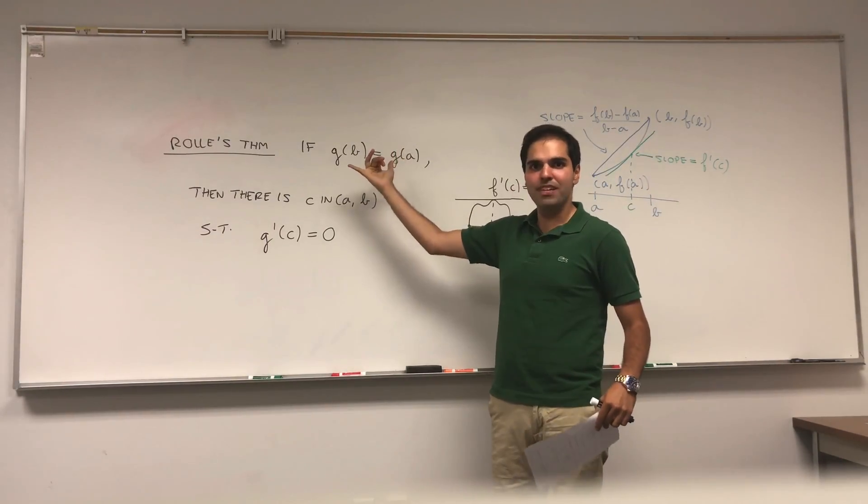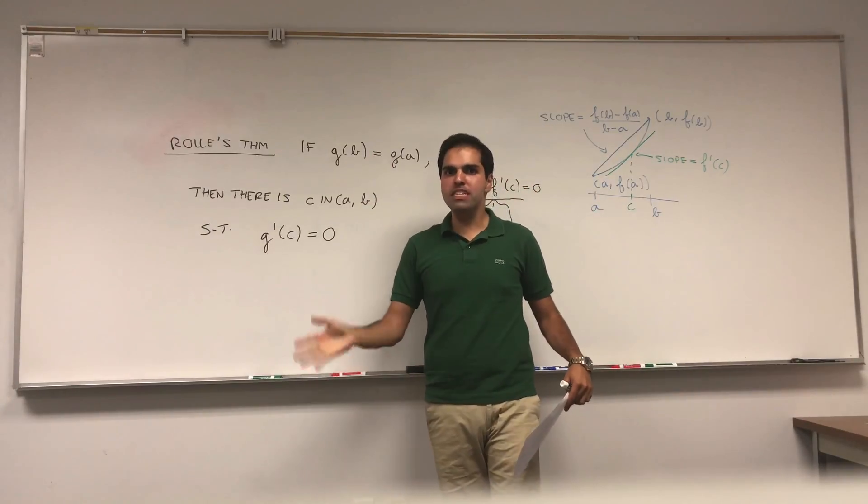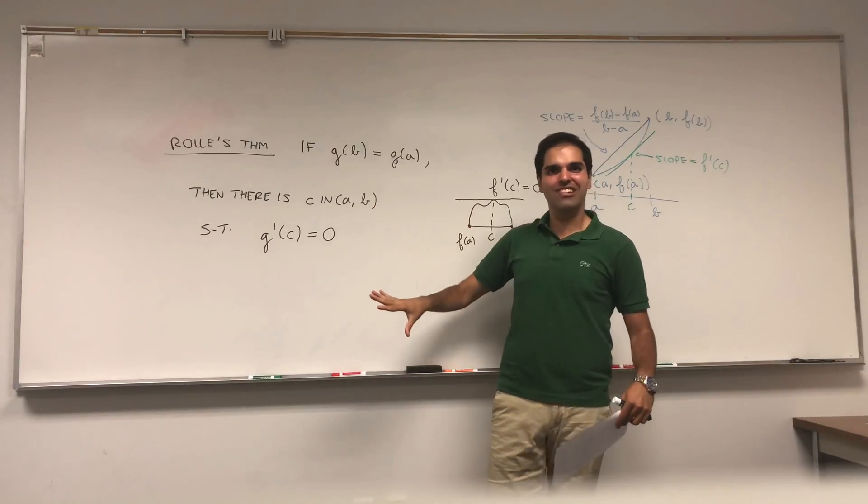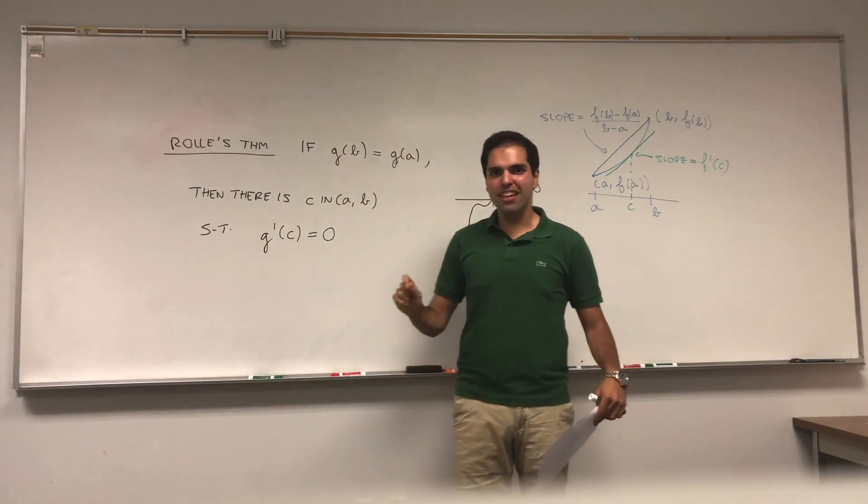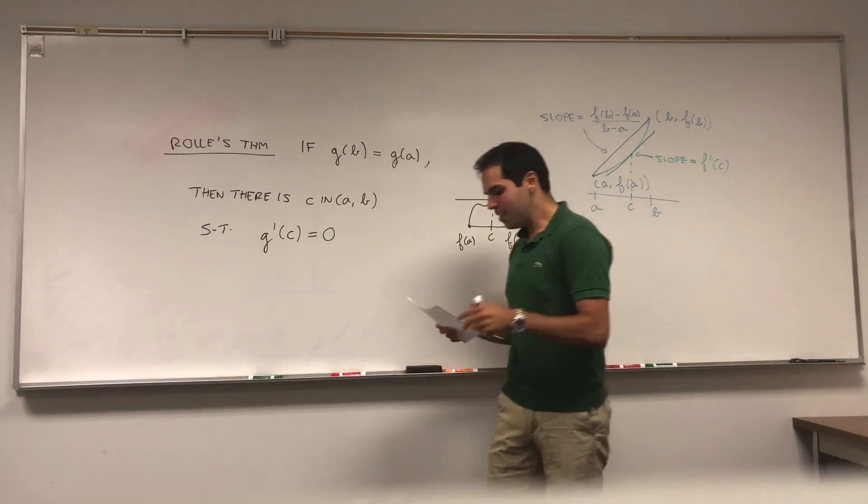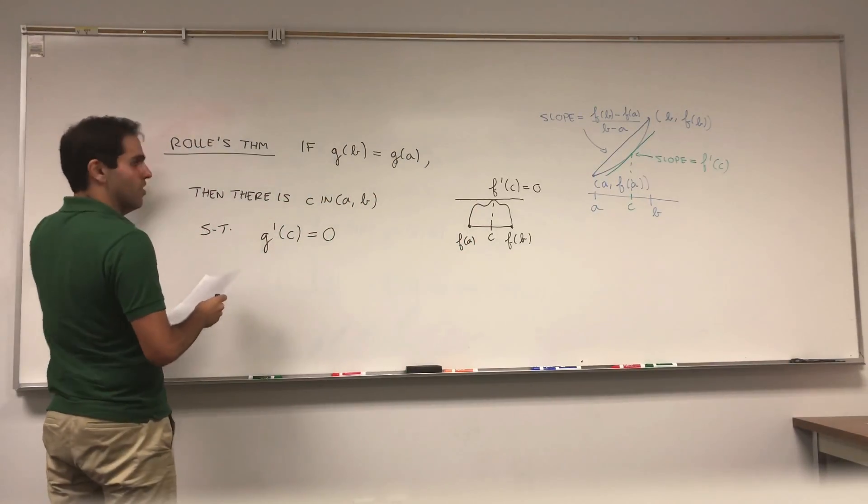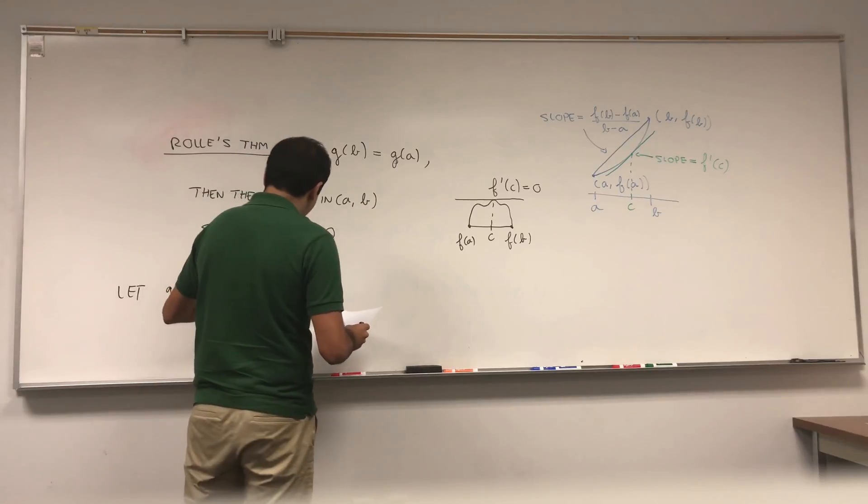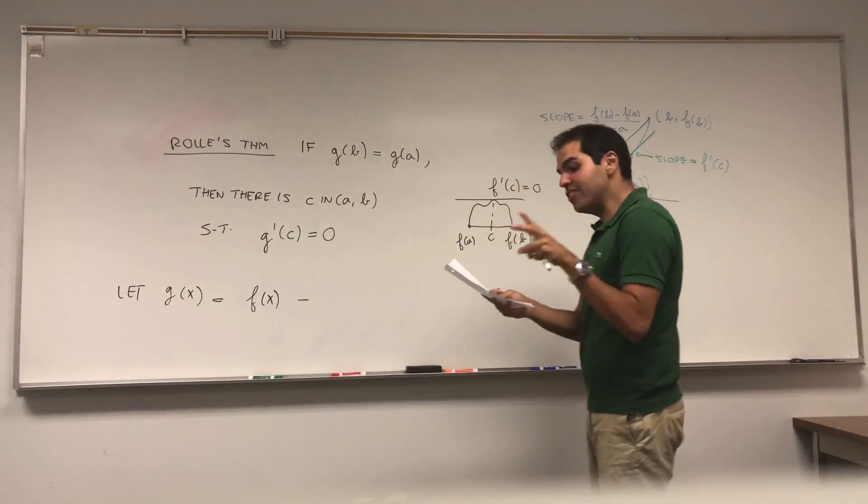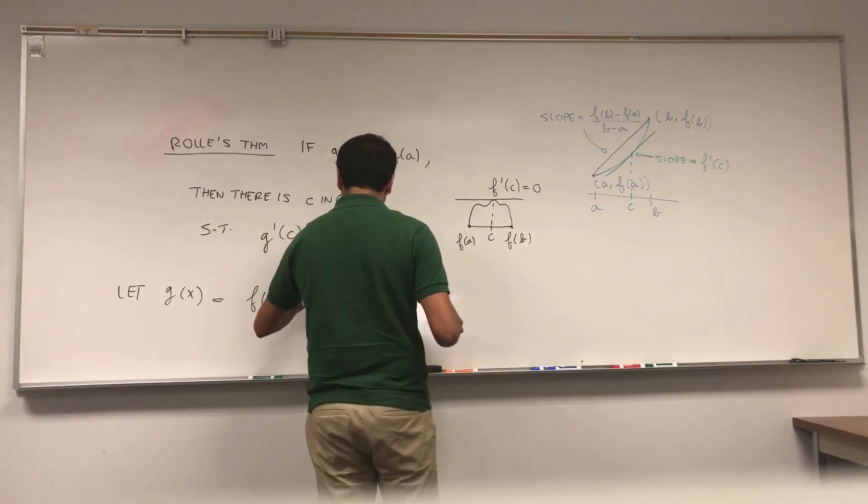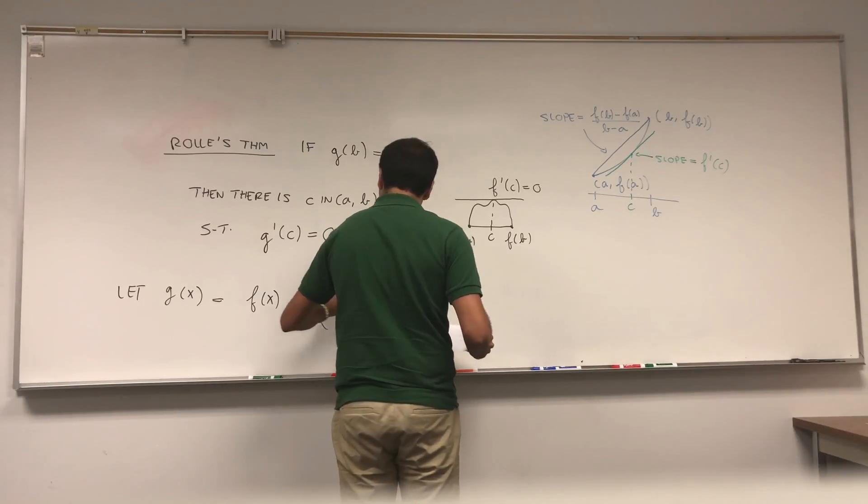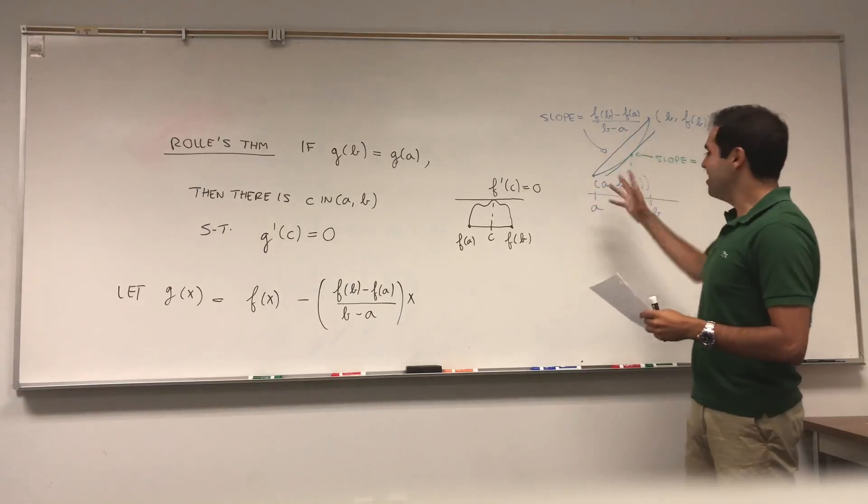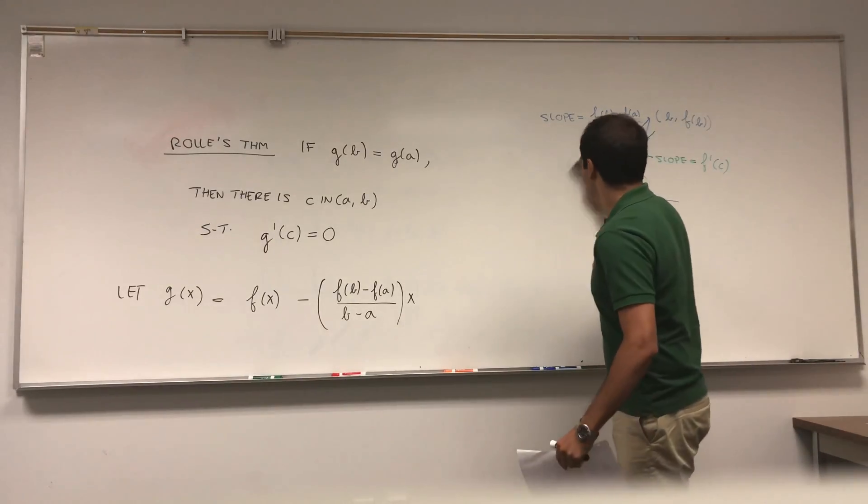If in the mean value theorem f(b) equals f(a), you do get that. But interestingly, what we'll do, we'll actually use Rolle's theorem to prove the mean value theorem. And we'll do this by concocting a very clever function g. So here's the function, without further ado. So again, let's take this as a given. Now let g(x) be the following: f(x). So you're taking your function f and you're subtracting a very special linear function. Namely, nothing else than f(b) minus f(a) over b minus a, times x. So you're subtracting a linear function whose slope is precisely the slope of this secant line. And let's see what happens now.